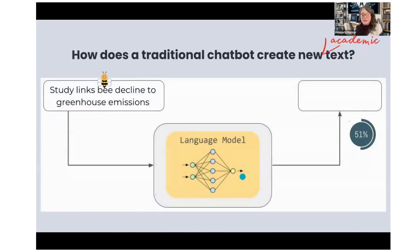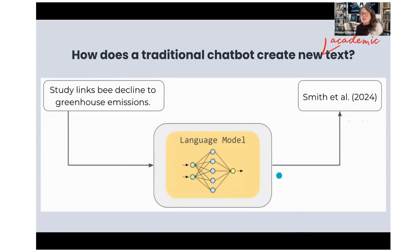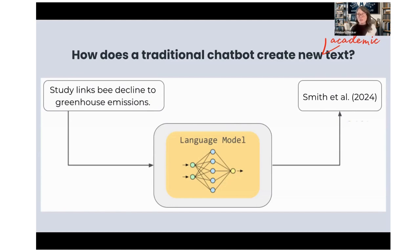In academic text, if you have a sentence like 'a study links bee decline to greenhouse emissions,' the language model thinks: what most likely comes next in an academic text? Probably a citation. So it will hallucinate a citation. Students are starting to ask faculty, 'I can't find this source — I found it on ChatGPT.' Well, ChatGPT hallucinated it, so you're not going to find it. That's kind of how that works.